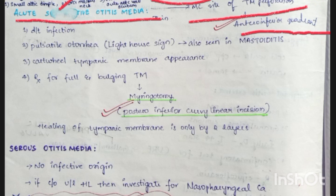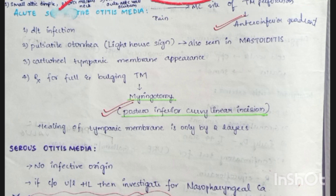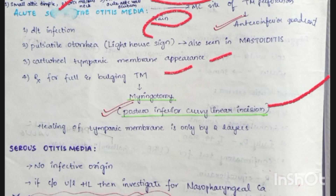In acute suppurative otitis media (ASOM), the most common site of tympanic membrane perforation is the anterior inferior quadrant, caused by infection. Pulsatile otorrhea and lighthouse sign are seen, also seen in mastoiditis. Cartwheel tympanic membrane appearance is present, and it is painful. Treatment for a full, bulging tympanic membrane is myringotomy, done with a posterior inferior curvilinear incision. Healing of the tympanic membrane occurs by two layers only.